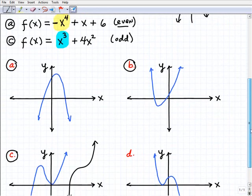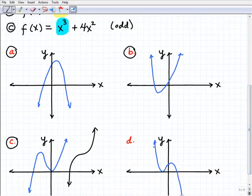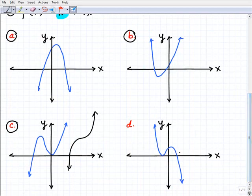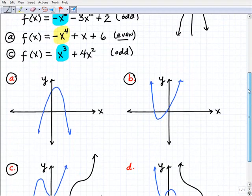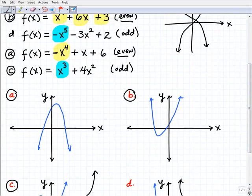And then, of course, this other odd polynomial graph D is kind of doing, oops, that's pretty bad graph. It's kind of doing the reverse of that y equals x cubed. It's kind of doing this, right? So we'll assign graph D up here to this polynomial.